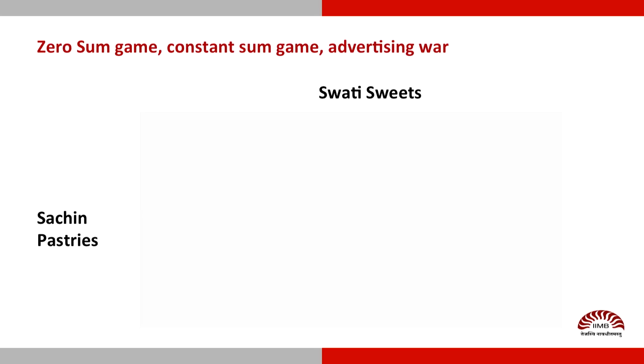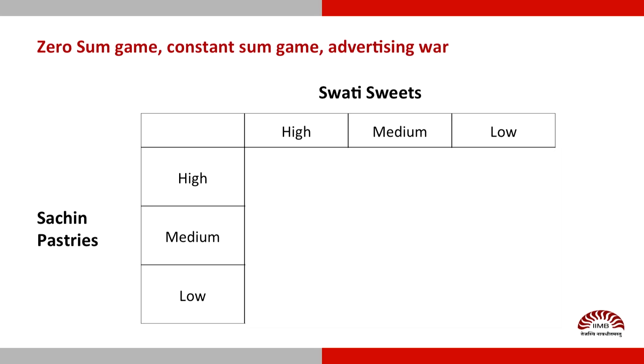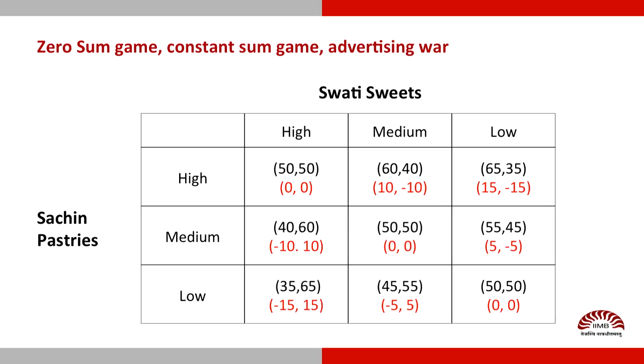Let's now look at another game. This one is being played between Sachin and Swathi. Swathi has a sweet shop and Sachin sells pastries, and they are trying to decide how much they should advertise. Advertising is expensive, so they would like to keep their advertising levels as low as possible, but advertising also helps them gain market share. Their strategies are high, medium, and low levels of advertising, and the different cells tell you what the payoffs are.